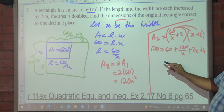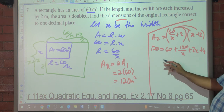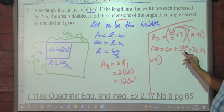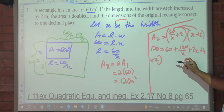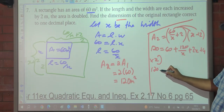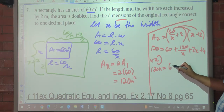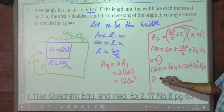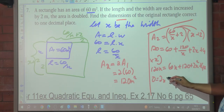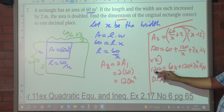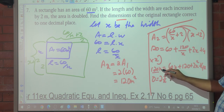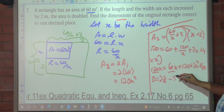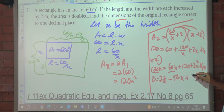Everything goes to one side. First I'm going to multiply through by X to get rid of the fraction, giving: 120X equals 60X plus 120 plus 2X squared plus 4. As you can see it's quadratic, so: 0 equals 2X squared, and 60 minus 120 is negative 60, plus 4 is negative 56X, plus 120.